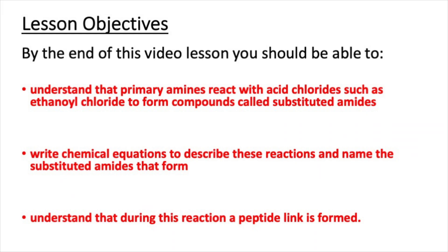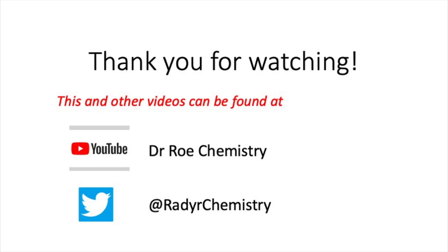That concludes this video lesson. After watching this video you should now understand that primary amines react with acid chlorides such as ethanoyl chloride to form compounds called substituted amides, be able to write chemical equations to describe these reactions and name the substituted amides that form, and understand that during this reaction a peptide link is formed. Please check out our YouTube channel Dr. Rho Chemistry, which has lots of GCSE, AS, and A-level videos, and our Twitter at Radachemistry. See you in the next episode.